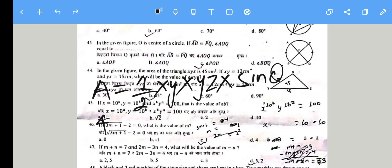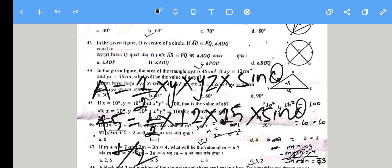Using the formula: Area = 1/2 × XY × YZ × sin θ. So 45 = 1/2 × 12 × 15 × sin θ. Cross multiplying and simplifying gives sin θ = 1/2, which means θ = 30 degrees. So 30 degrees is the correct answer.